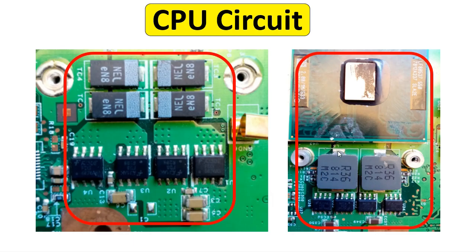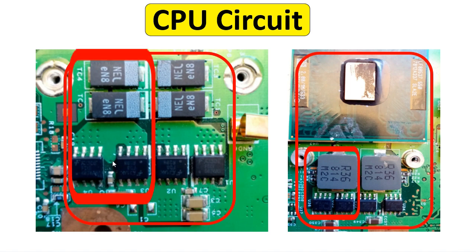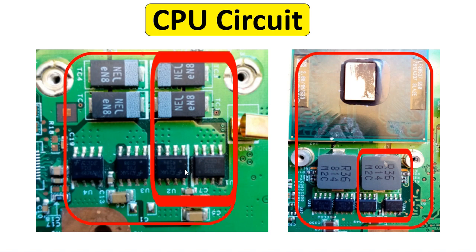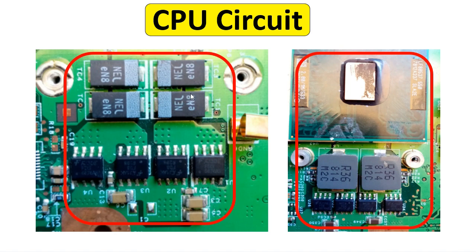The first channel has four MOSFETs — two MOSFETs here and two others on the back of the motherboard — with two chemical capacitors. The second channel has an inductor, two MOSFETs here and two on the back (four total), and two chemical capacitors. These capacitors are actually tantalum capacitors, not chemical capacitors. They are polarized — you can see the plus and minus markings.